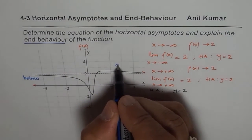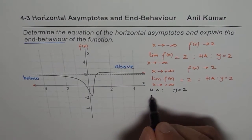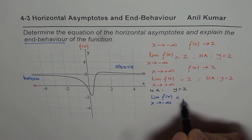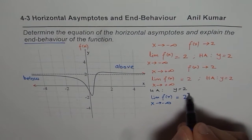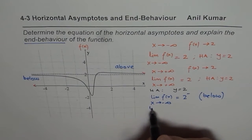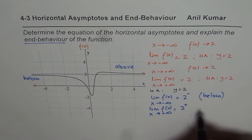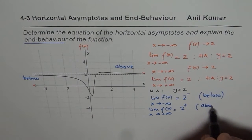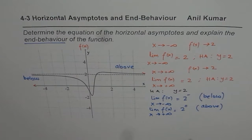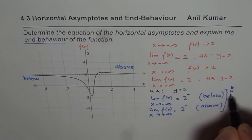In this case it approaches from above, since the value of the function is slightly more than 2. So we could say the limit of the function as x approaches negative infinity is 2 from below — it is approaching from below. And the limit of the function as x approaches positive infinity is slightly more than 2, so it is approaching from above. This is also called end behavior.